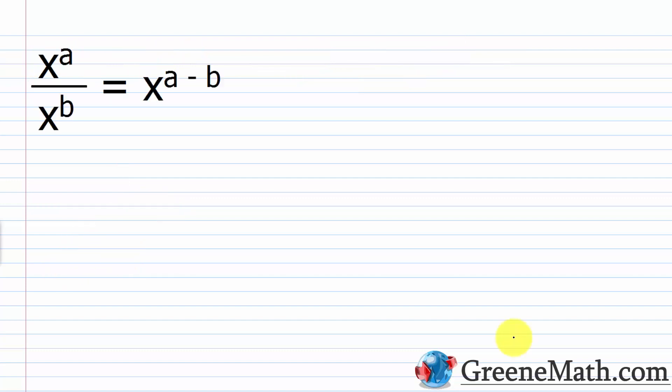Now that we have a great understanding of negative exponents, let's move on to the quotient rule for exponents. When we divide with like bases, we keep the base the same and subtract the exponent in the denominator from the exponent in the numerator. It's important to follow that direction — subtraction is not commutative, so order matters. For x to the power of a over x to the power of b, this equals x raised to the power of a minus b.